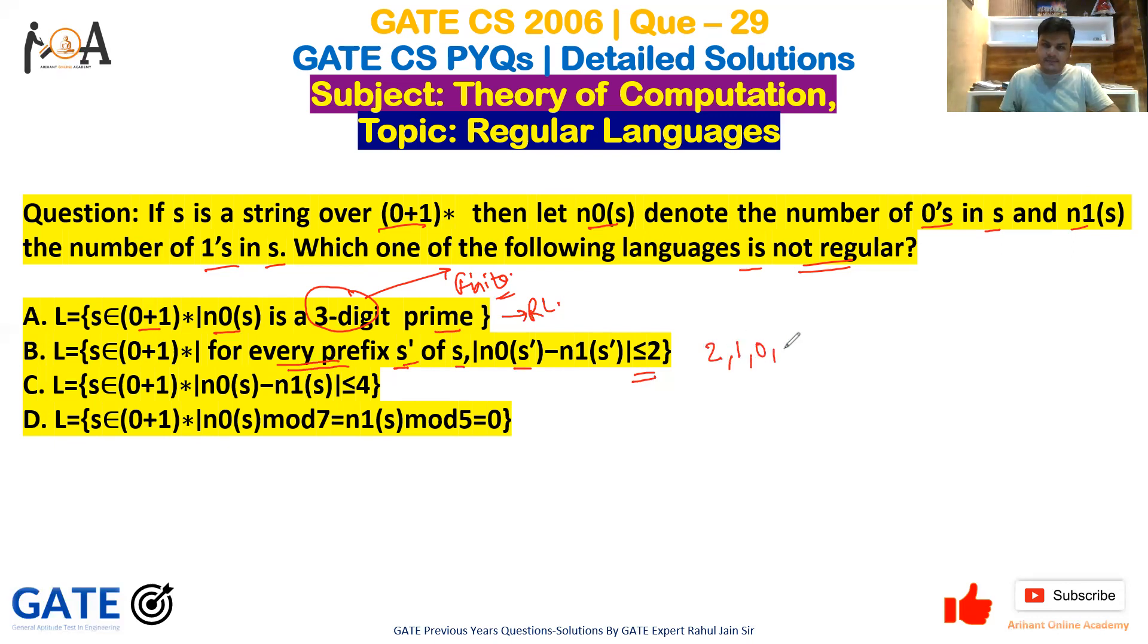Every prefix of s': |n0-n1| should be less than or equal to two. So this may be 2, 1, 0, -1, or -2. If the difference is more than two or less than minus two, it would go to a dead state. So only six states are required. Hence this is also finite.